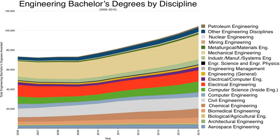Engineering training in South Africa is typically provided by universities, universities of technology, and colleges for technical and vocational education and training. The qualifications provided by these institutions must have an Engineering Council of South Africa (ECSA) accreditation for graduates and diplomats to be registered as candidate-certificated engineers, candidate-engineers, candidate-engineering technologists, and candidate-engineering technicians.